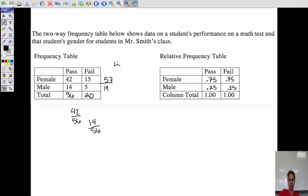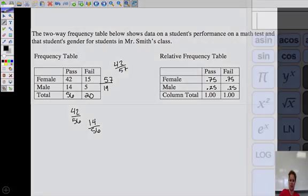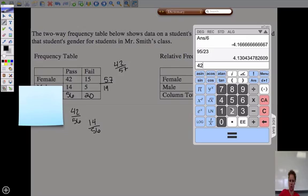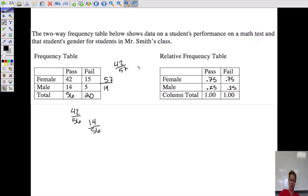So we could say the percentage of females that passed would be 42 divided by 57, and that's going to be 73%, which would mean the percentage of females that failed would be 15 out of that 57, and that would be 27%. So you could look at it two different ways.